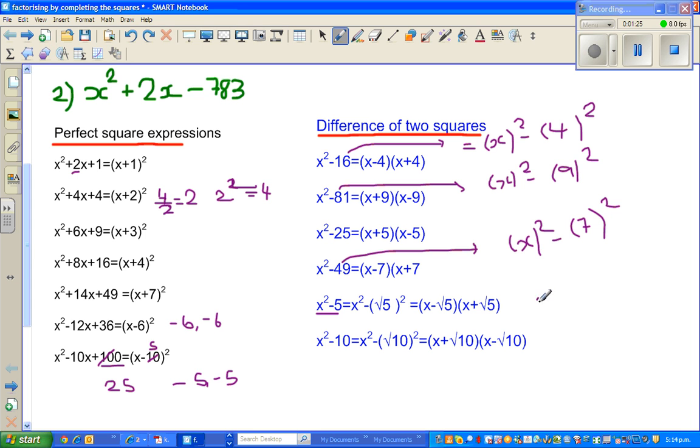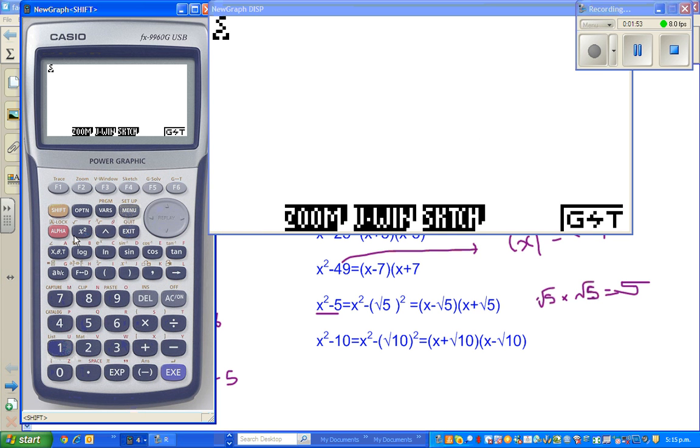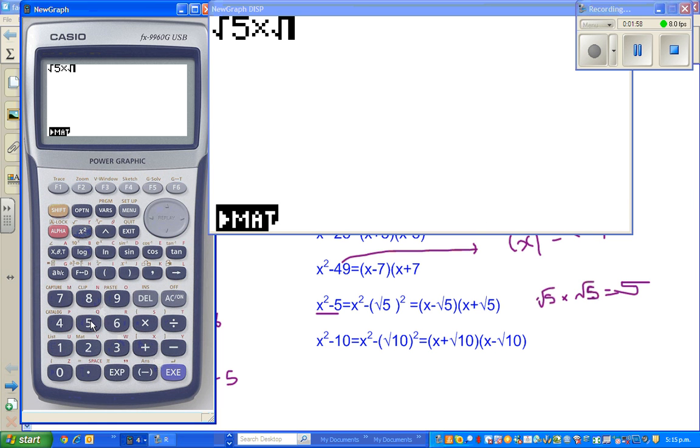So I can say, square root of 5 times square root of 5 is 5. I'll show this on the calculator. So if you do square root of 5 times square root of 5, that gives you 5. So that's true for any example.